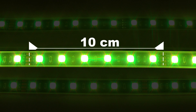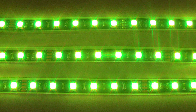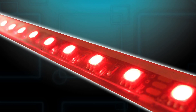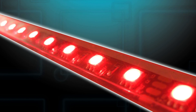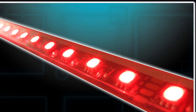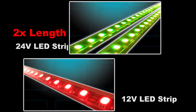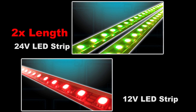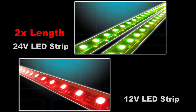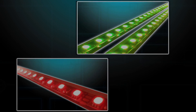24 volt strips are also more advantageous as they can be wired through one side to supply power for greater lengths. A 24 volt LED strip has only half the current consumption of a 12 volt strip. Thus you can wire the 24 volt strip to twice the length of a 12 volt strip on one unit.